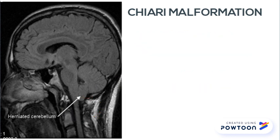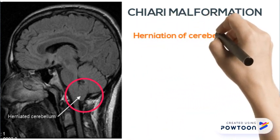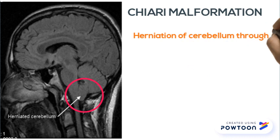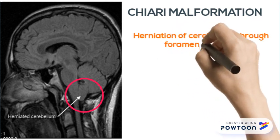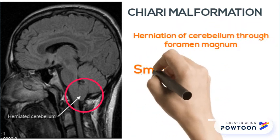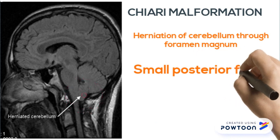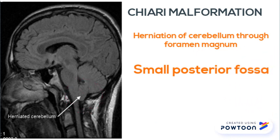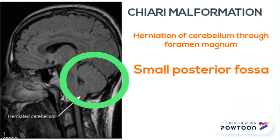Chiari malformation is characterized by herniation of the cerebellum into the foramen magnum. You can see the cause is a small posterior fossa — here the posterior fossa is so small that it cannot accommodate the cerebellum.